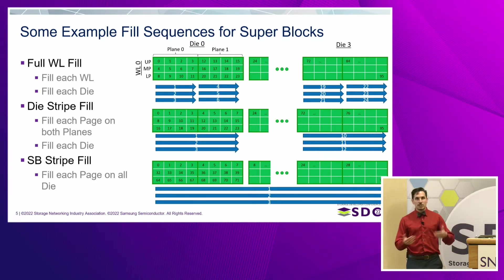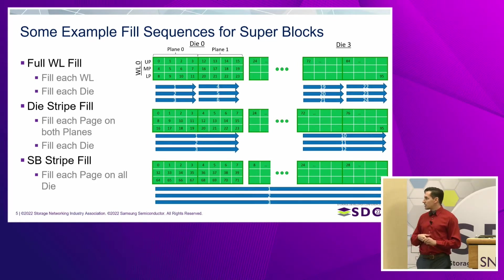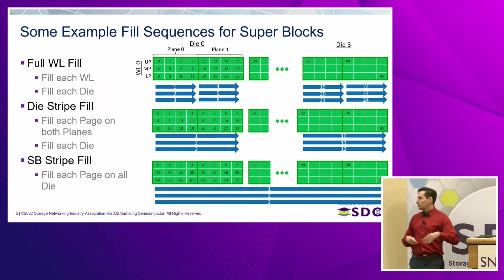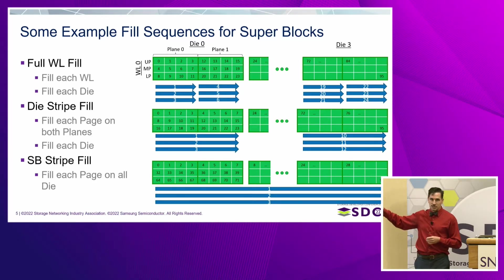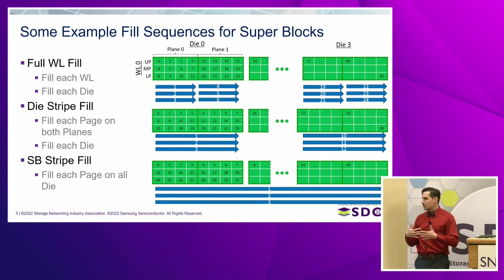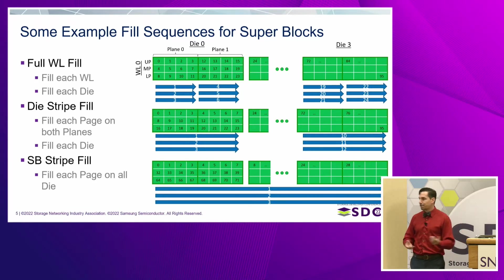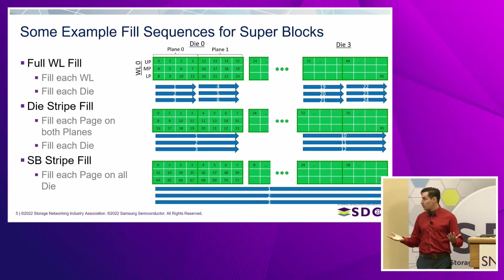We fill the upper page, then the middle page, then the lower page. Once all three pages have been programmed on plane zero, you can then start transmitting data to plane one. This is the full word line fill, with blue lines showing which pages and sequences. Moving to the die stripe, we fill plane zero and plane one pages similarly, filling all three pages so we can program both planes together at the same time.